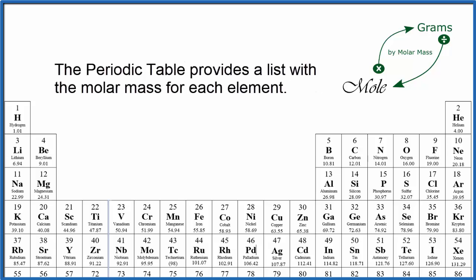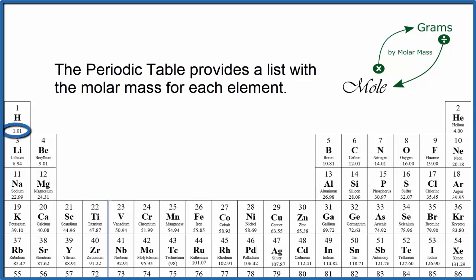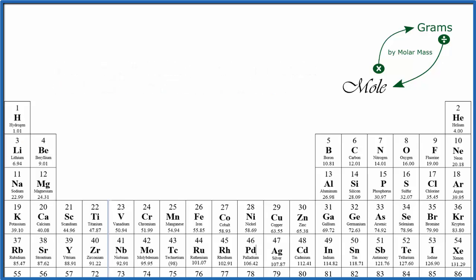The periodic table provides a list of the molar mass for each element, so it's really convenient. That number is usually found right below the element symbol. So if we wanted to know the mass of one mole of sodium, we'd go to the periodic table, find sodium, it's 22.99, and the units, grams per mole.